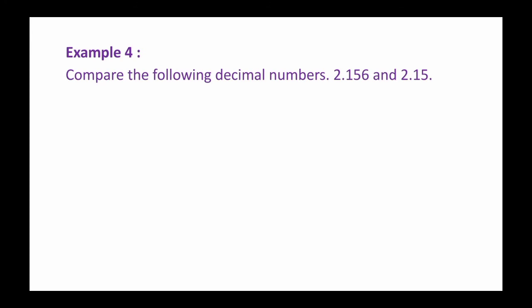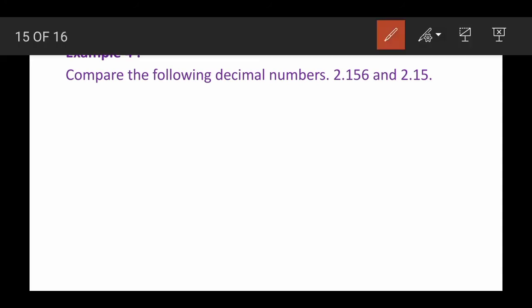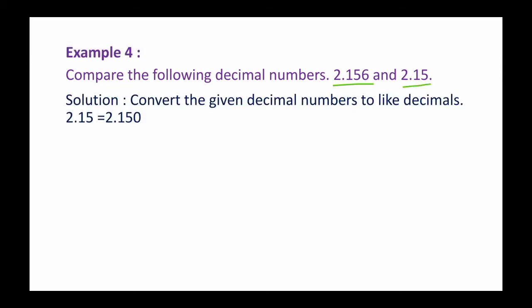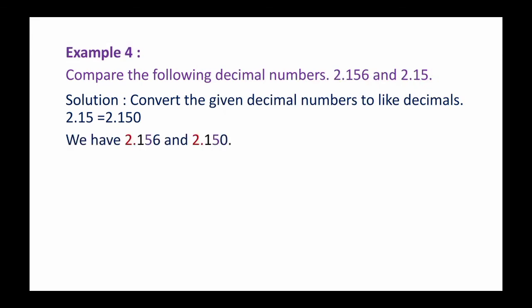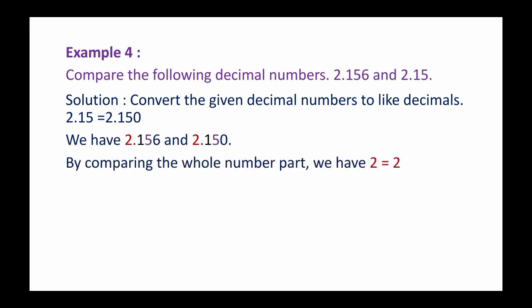Here is an example: compare 2.156 and 2.15. These are unlike decimals, so we must first convert them to like decimals. The maximum number of decimal places is three, so we convert 2.15 to 2.150 by adding a zero to the right. Now we have two like decimals: 2.156 and 2.150. Step one is complete.